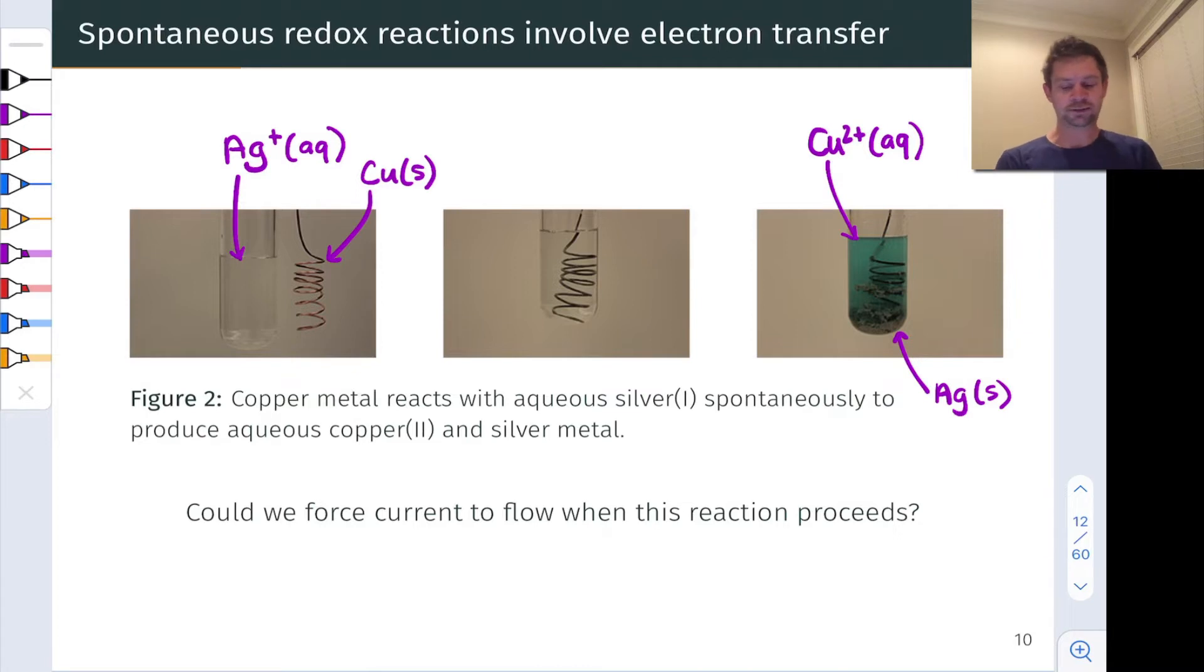The question that galvanic cells really try to answer is: could we somehow force an electrical current to flow over a macroscopic distance as this reaction takes place, rather than the electron transfer happening at a very tiny scale between the copper and silver atoms?